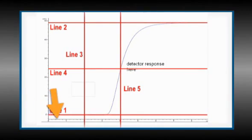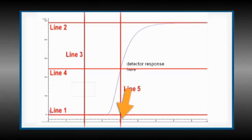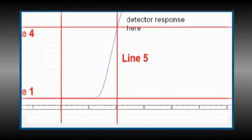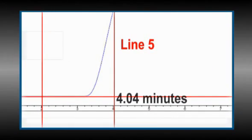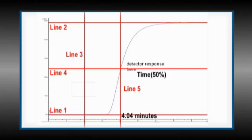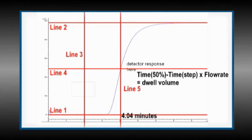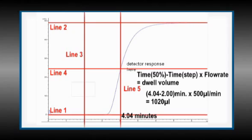Follow the X axis to the 50% B vertical line and determine the time, as closely as possible, at which the 50% response is observed. An error of 0.1 minute will be a 50 microliter error in your delay volume estimate. In this example, we estimated the 50% time at 4.04 minutes. To calculate the dwell volume, the simple formula is: time at 50% minus time of the step, times flow rate, equals dwell volume. In this example, 4.04 minus 2 minutes, times 500 microliters per minute, equals 1,020 microliters.